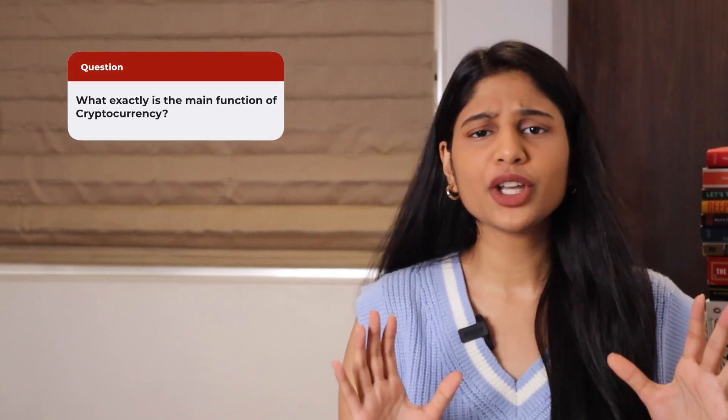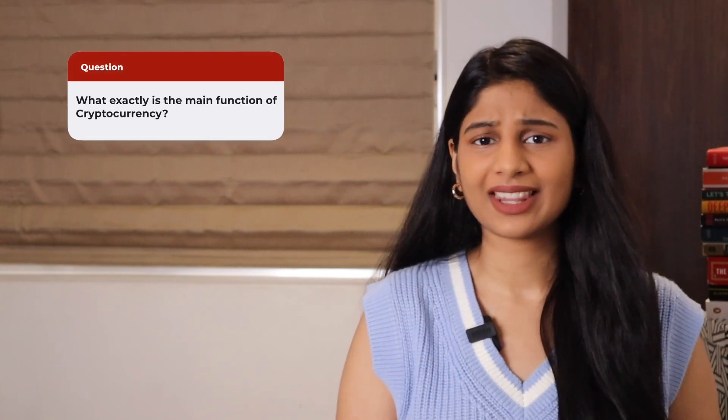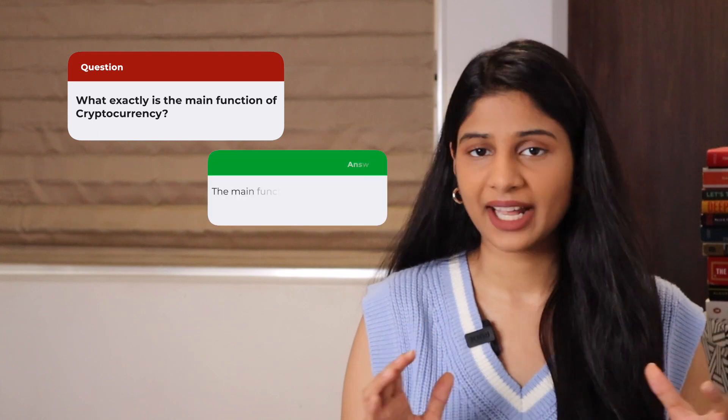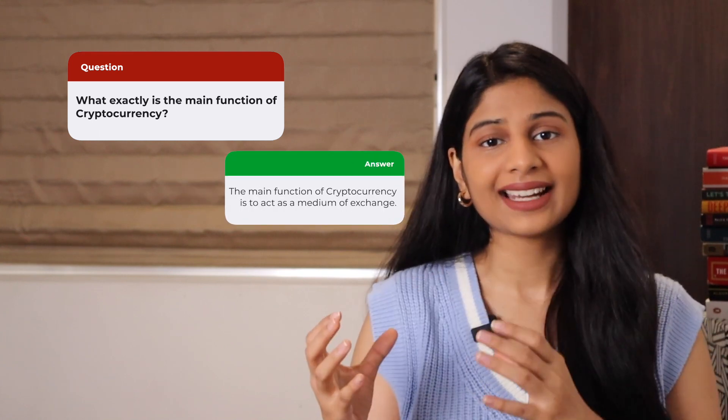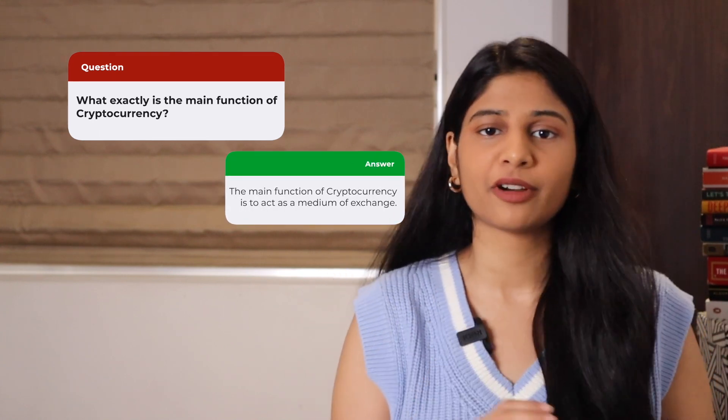I'm sure you'll answer that one of the main functions is for cryptocurrencies to act as a medium of exchange. For example, either you use Bitcoin to purchase coffee in the real world, or you use Ether to perform a transaction on the Ethereum blockchain.